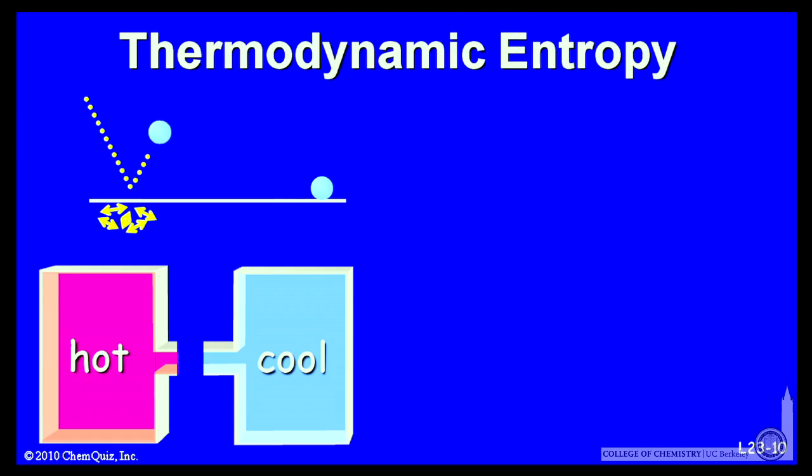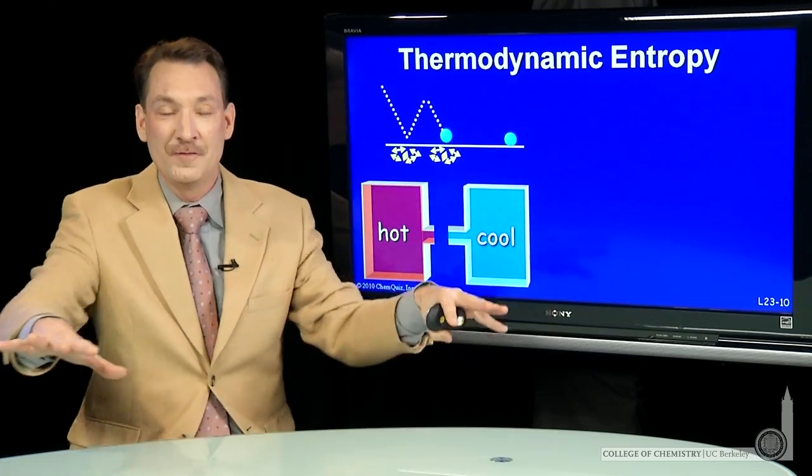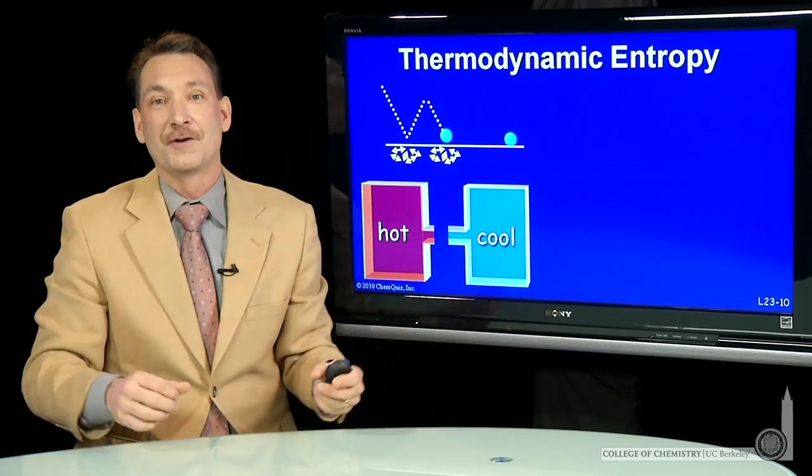That robs some of the energy and you get a lower bounce, and more energy is distributed into microstates in the floor. That's the natural progression of things: energy moving into many microstates.